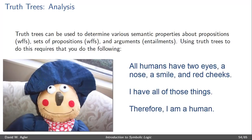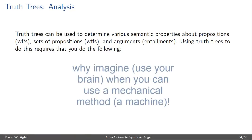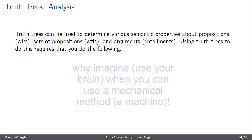Suppose your friend makes an argument and you want to know whether or not his argument is valid or invalid. You might try to imagine the premises being true and the conclusion false, but another way you could do this is to make use of the truth tree method, which is a mechanical method.